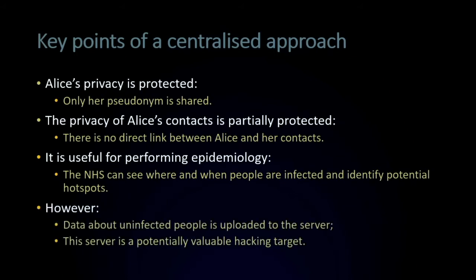The key points of a centralized approach: Alice's privacy is protected — no one needs to know Alice has been infected; only her pseudonym is shared, which is meaningless to humans. The privacy of Alice's contacts is partially protected — only pseudonyms are shared and there's no direct link between Alice and her contacts. The centralized approach is really good for epidemiology because the NHS gets all the data with all the timestamps and can identify potential hotspots of infection. However, there are privacy risks — people who are uninfected are being uploaded to the server. Because the server contains a lot of information about people, even as pseudonyms, it's potentially valuable if that data could be combined with other information and used in future to de-anonymize people.